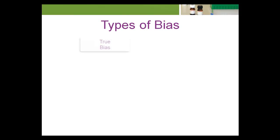There are two types of bias: true bias and comparative or relative bias. We'll now look at these two types of bias in more detail.